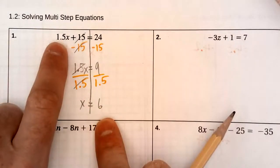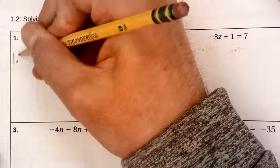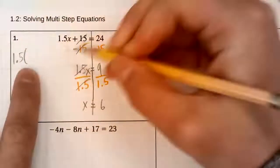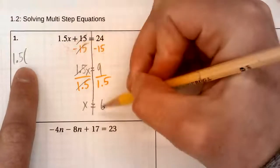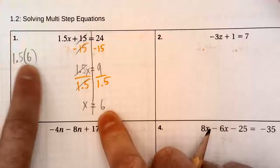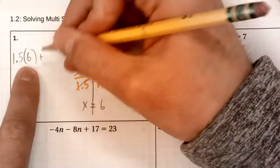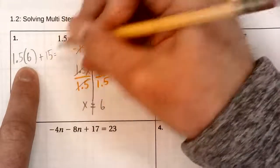So 1.5 times 6, 1.5 times x. Instead of x, I'm using my value for x. We think that x is 6. So that's what I'm going to use here. 1.5 times x, so that's me plugging in, plus 15 equals 24.